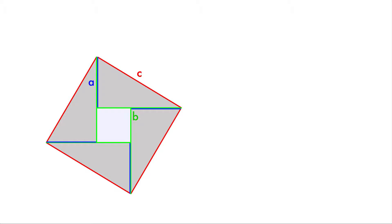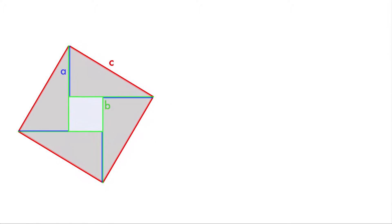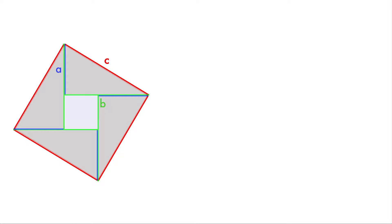So the way we're going to show the Pythagorean theorem is we're going to calculate the area of this square, and actually we're going to calculate it two different ways. So let me show you what I mean. So one is, we've got this big square. What's the area of it? Well, the area of that big square is just c squared.